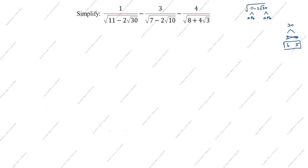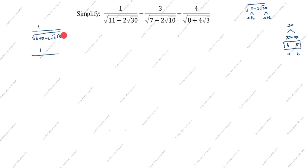We take a as 6, b as 5. So 1 divided by root of (6 plus 5 minus 2 root 6 root 5). We recognize this is the format a² plus b² minus 2ab. We split 6 as root 6 squared, and 5 as root 5 squared.